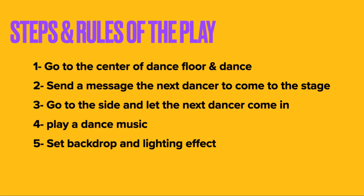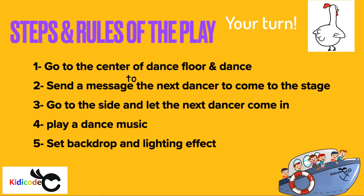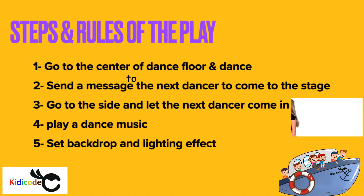In order to create this dance party we need to follow five simple steps and write it in a language the computer can understand. The three main steps are: number one, go to the center of the dance floor and dance; number two, send a message to the next dancer to come to the stage; and number three, go to the side and let the next dancer come in. There are also two more steps: playing dance music and setting the backdrop and lighting effects.